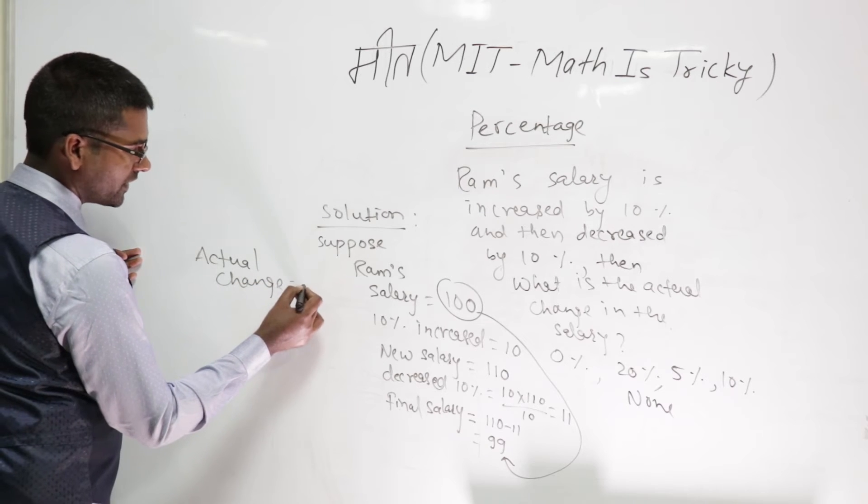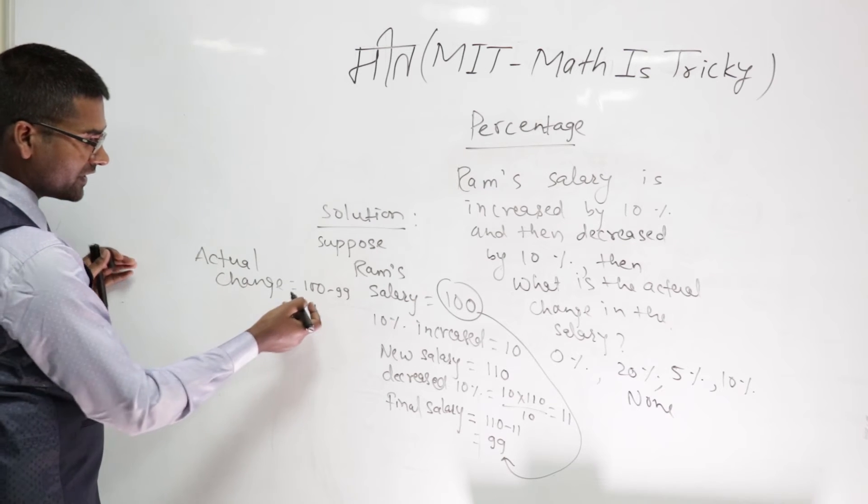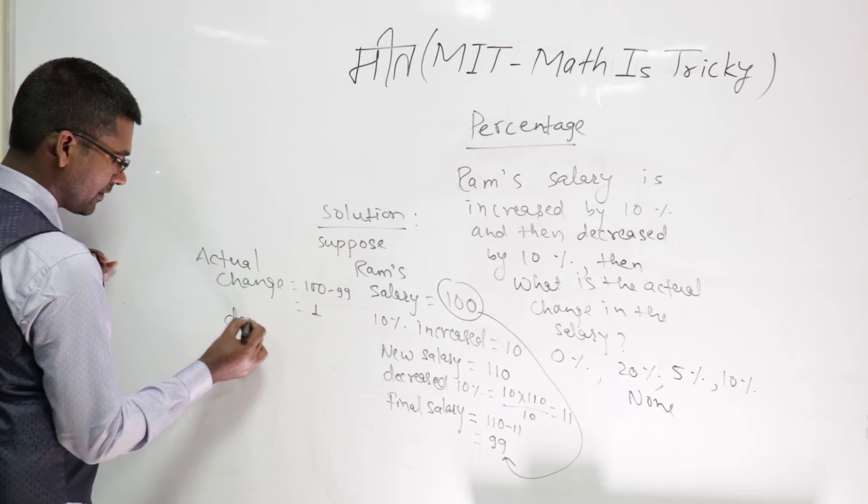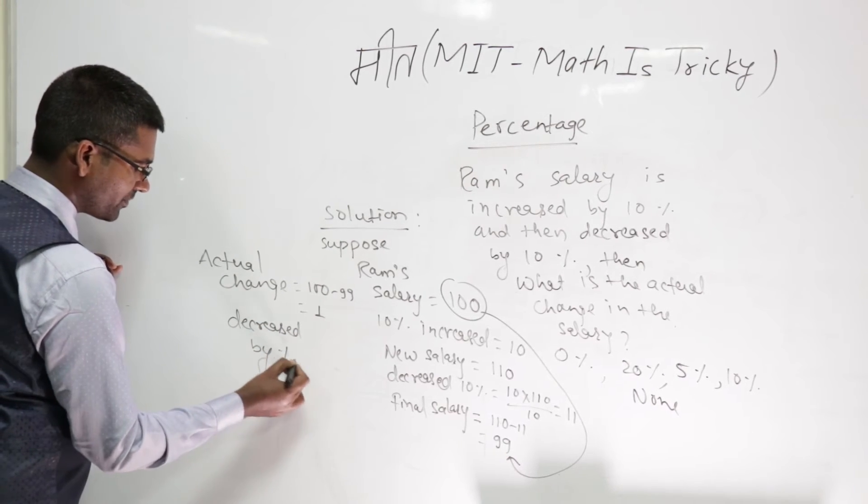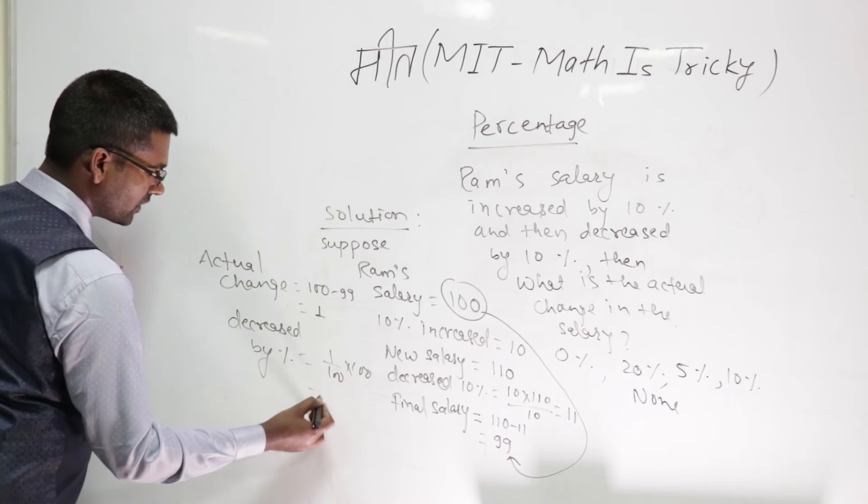The actual change is 100 minus 99, which is 1. And it is actually decreased, so it is decreased by what percent? The percent will be 1 by 100 into 100.